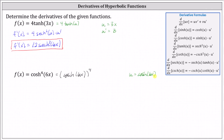Notice this is also a composite function, which means to determine u prime we will also have to apply the chain rule. The derivative of hyperbolic cosine u with respect to x equals hyperbolic sine u times u prime, which indicates u prime equals hyperbolic sine of six x times six, or six hyperbolic sine of six x.